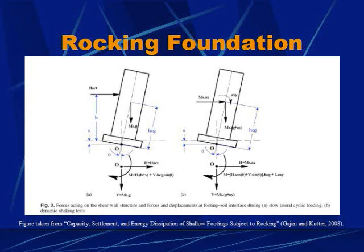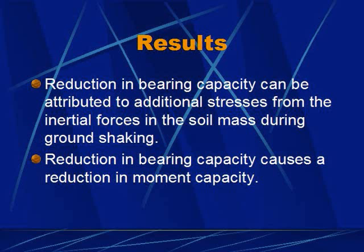The moment capacity is reached at about 2% rotation, and little degradation occurs in the moment capacity at larger rotations. The larger contact area ratios produce less permanent settlement and more cyclic uplift. As the contact area ratio decreases, less uplift and more yielding occur. The dynamic loading tests show that smaller rotations produce a stiffer response in regards to the moment-rotation behavior. The dynamic loading tests produce less uplift than the slow lateral cyclic loading tests due to the reduction of rotation of the footings.